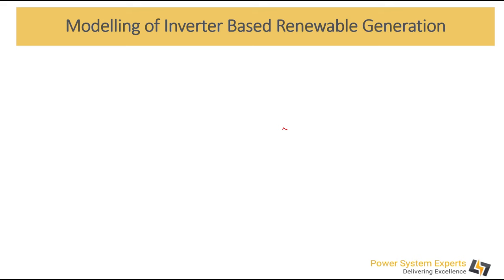Moving on, inverter-based modeling is something similar to what we have done for the synchronous generator. In this case, you are going to have your renewable generator, which is basically the combination or sum of all the generation in the whole power plant. For example, if you have 1.5 MVA wind turbines and 99 of them, you take the total — 99 multiplied by 1.5 MVA. The low voltages in this case are typically 0.69 kV, 0.7 kV, or in some cases 1 kV.